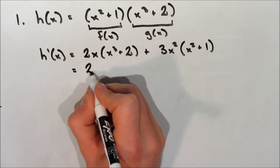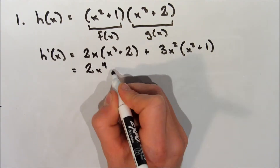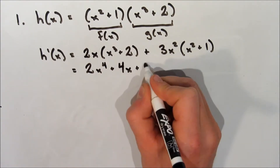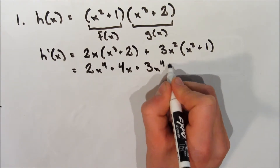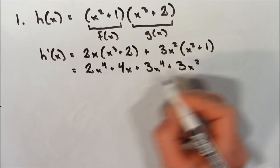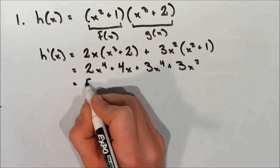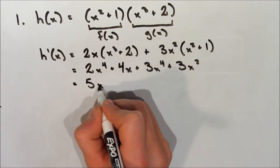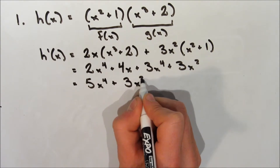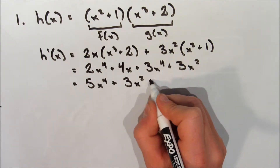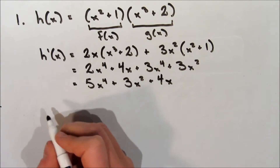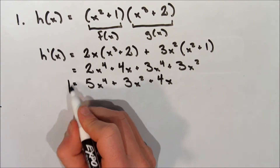Now we can expand these terms: 2x to the 4th plus 4x, plus 3x to the 4th plus 3x squared plus 3x squared. This all simplifies to 5x to the 4th plus 3x squared plus 4x. So that's the derivative of h of x.